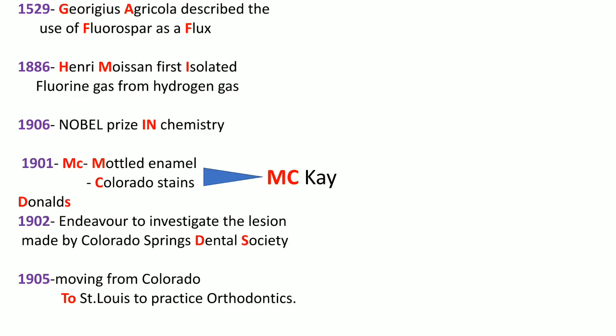McDonald's 'MC' stands for McKay — the arrival of McKay happens here. 'M' stands for mottled enamel and 'C' stands for Colorado stain. That is, Fabric McKay saw the discoloration and named it mottled enamel, and since it was in Colorado it was named the Colorado stain in 1901.